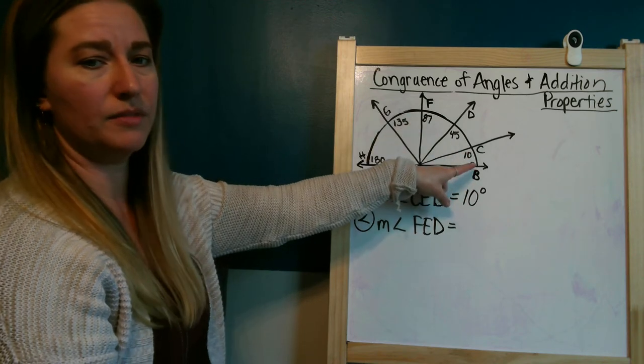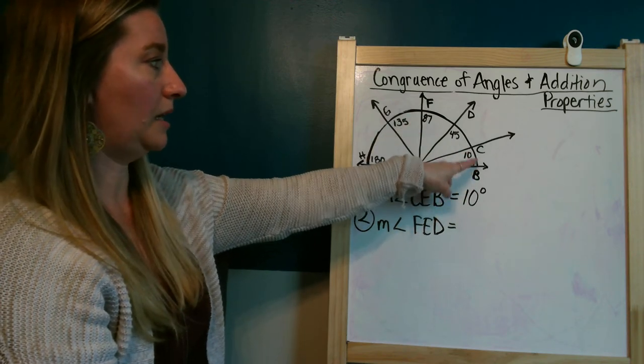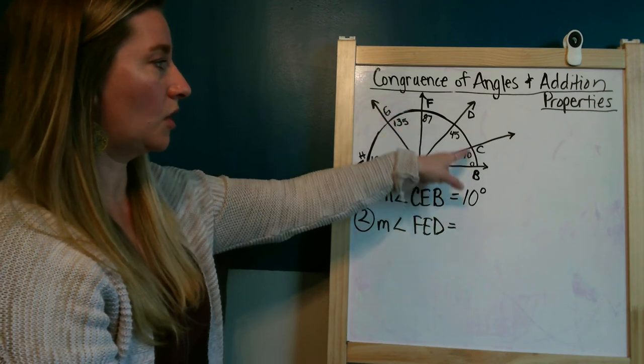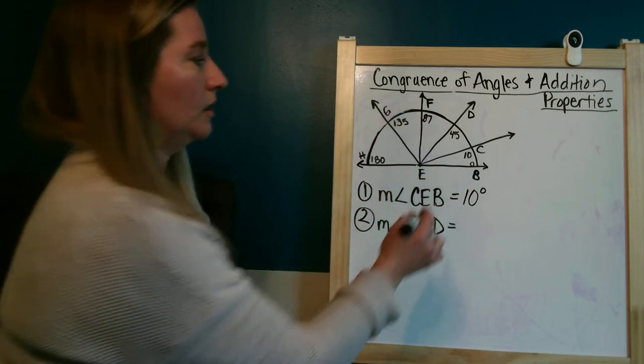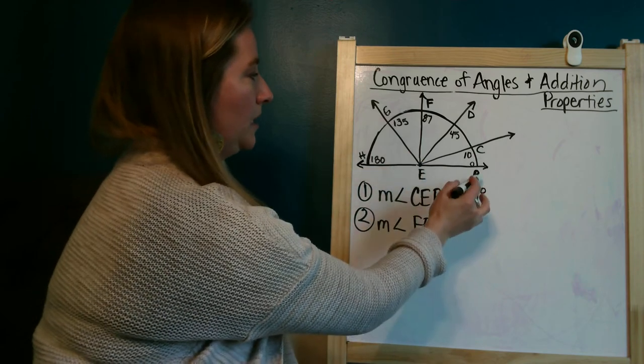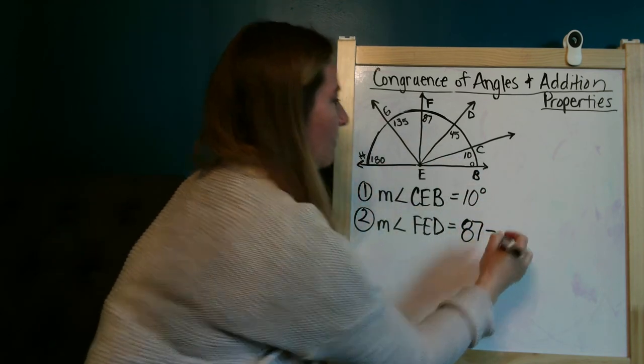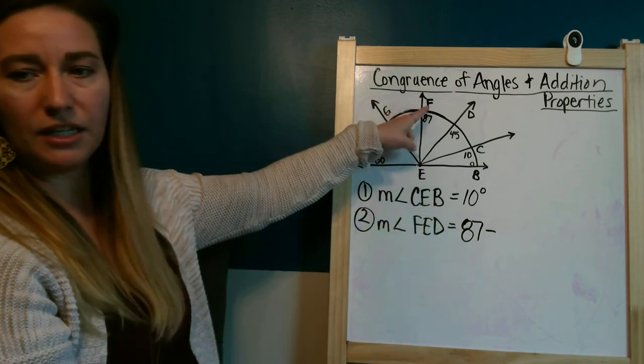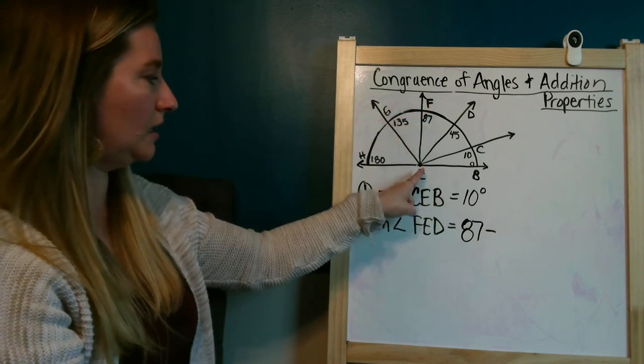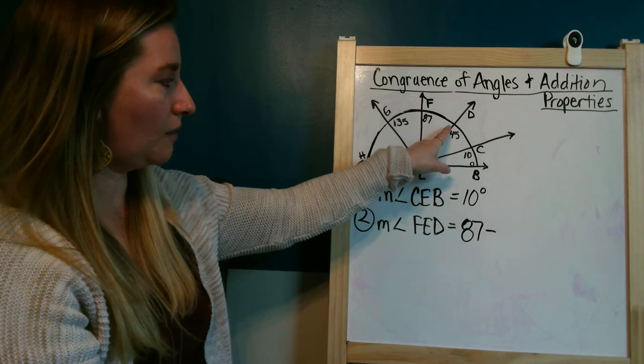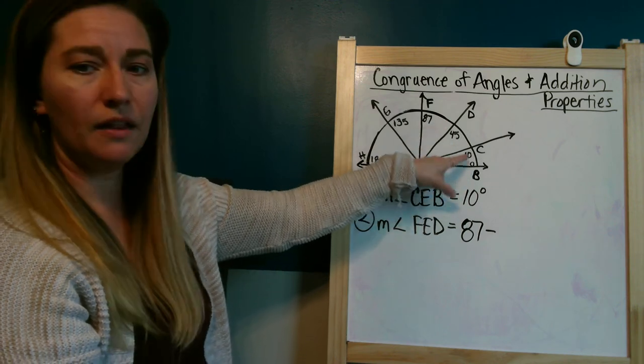But that's all the way from zero, from this point B. So I can't measure all of the 87 degrees. So what I can do is I know FED is 87 degrees. So I can take 87 and since I just need to find FED, I can take away the 45 degrees that is right here.